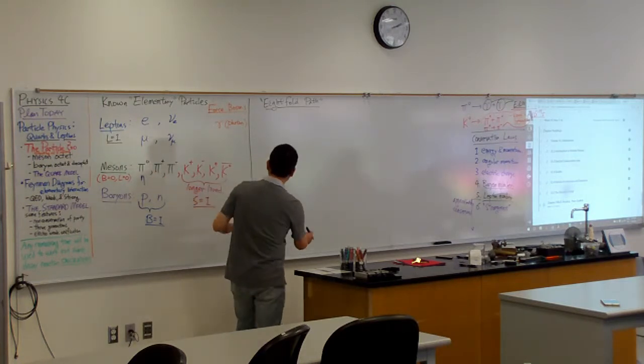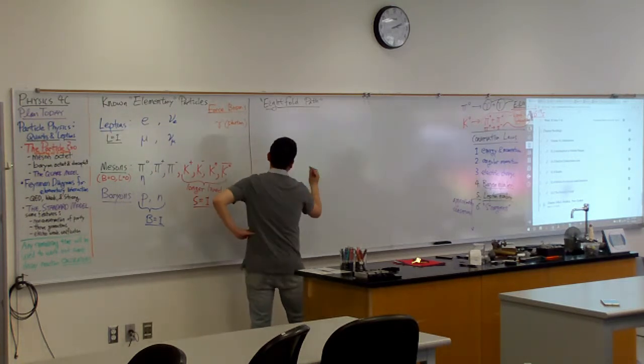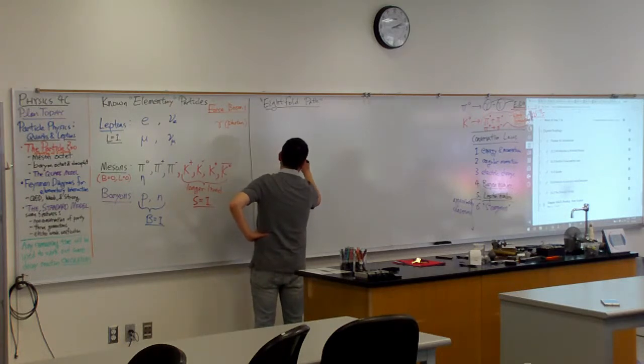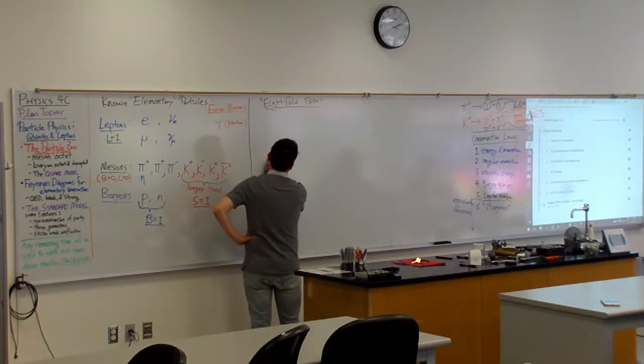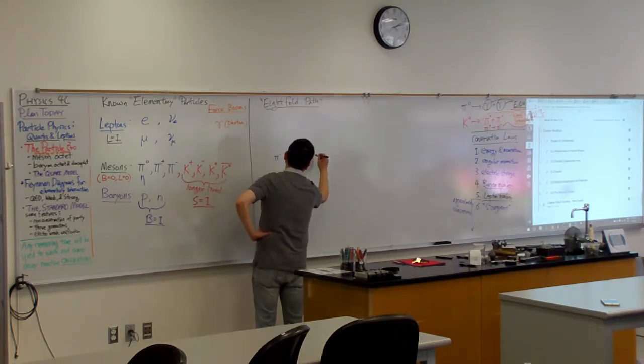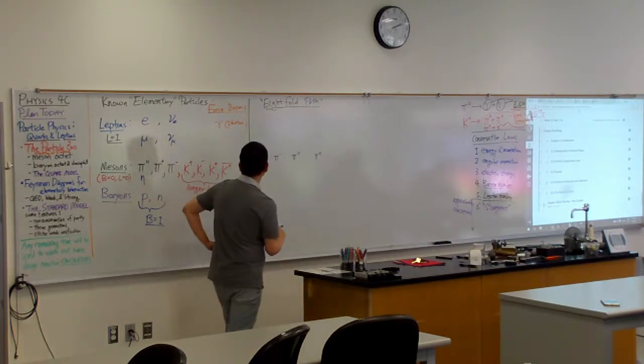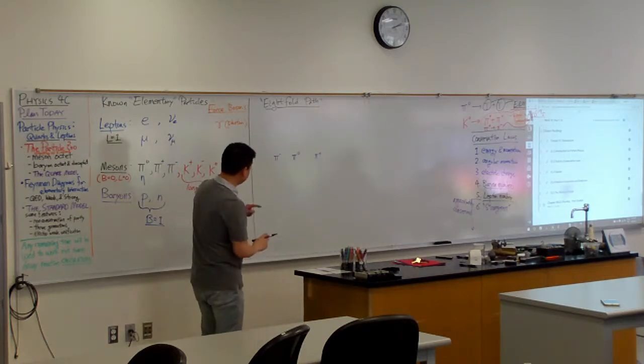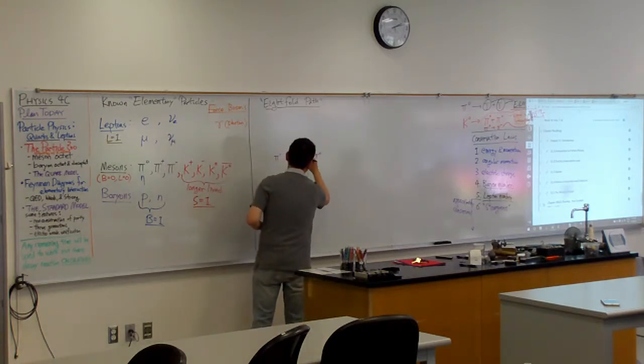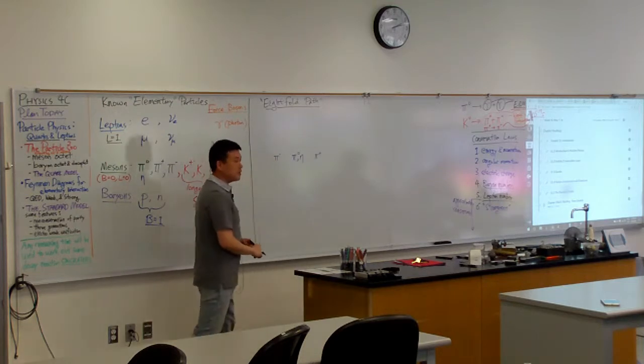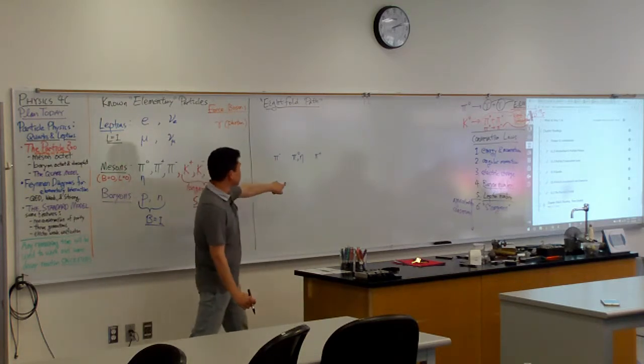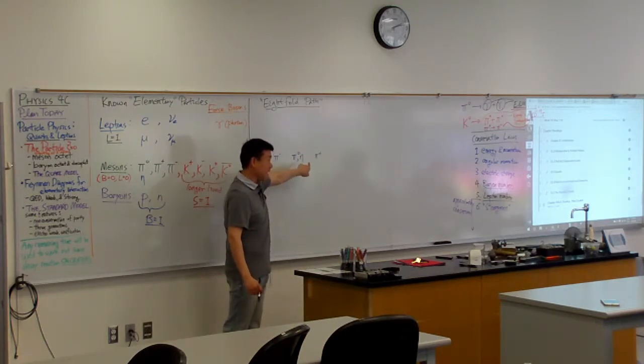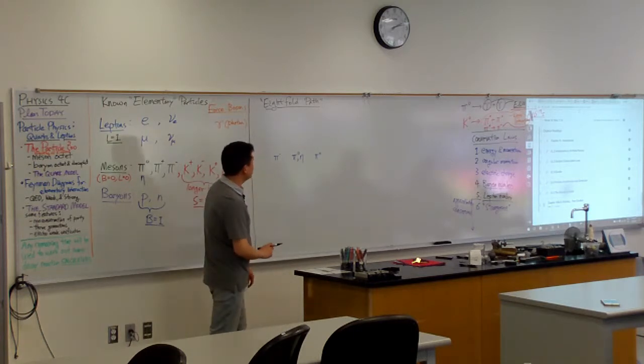I think he put the pi ions along a horizontal. Pi neutral, I want to say it's pi minus here, and pi plus here. And at the same center, he would also have the eta meson, because he's looking at these two as similar versions of each other. Eta is the heavier version of neutral pi meson.